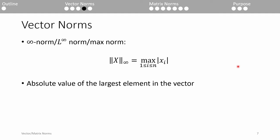When p equals infinity, we obtain the infinity-norm, or max-norm. It's defined as the absolute value of the largest element within the vector. This norm is often used in worst-case scenarios.